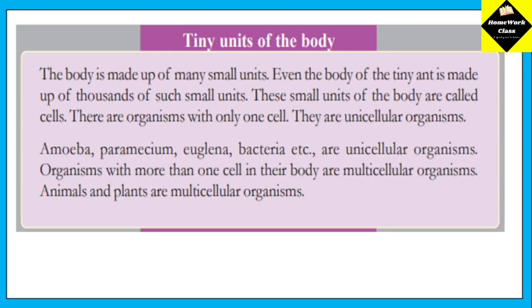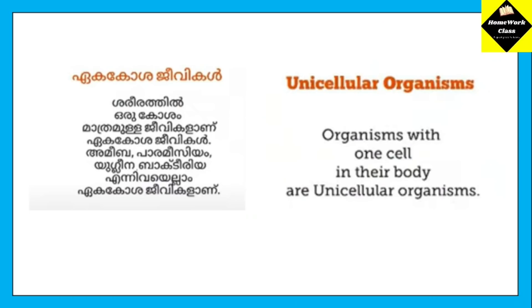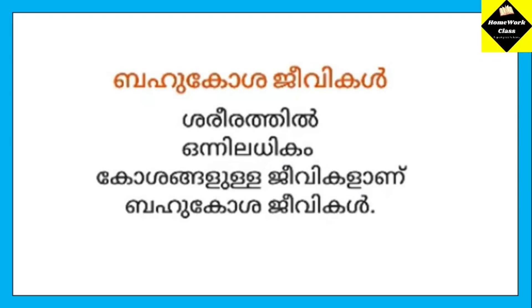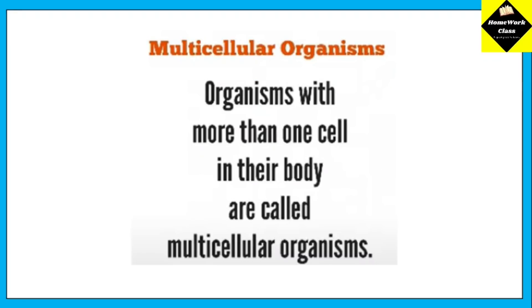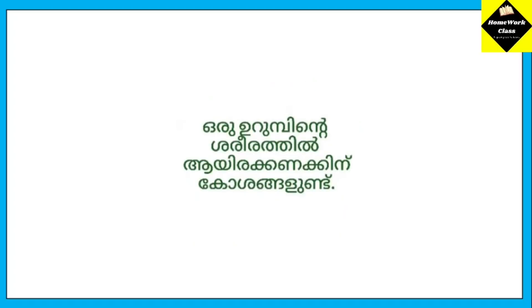Organisms with more than one cell in their body are called multicellular organisms. Animals and plants are called multicellular organisms.